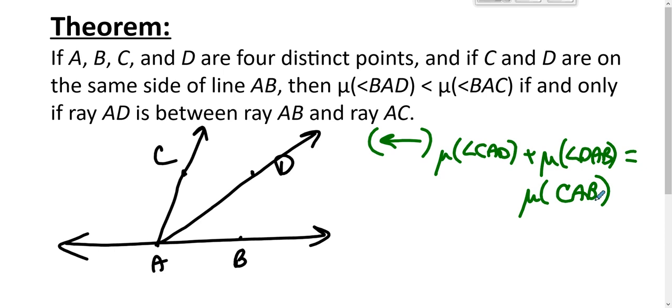And we know that—what do we want? We want BAD less than BAC. We know this is a positive number, and if this is a positive number and these two add to that, then the measure of angle BAD has to be less than the measure of angle CAB, and we've got it.